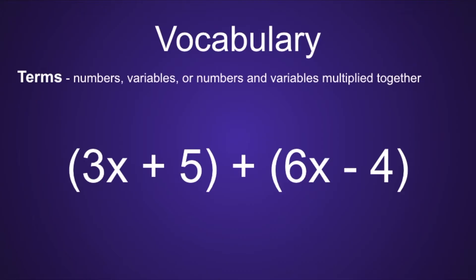The first vocabulary term is terms, and terms are numbers, variables, or numbers and variables multiplied together. In the expression below, the terms would be 3x, 5, 6x, and negative 4. Notice how I kept that minus sign in front of the 4 with it to make it a negative 4. This is very important.